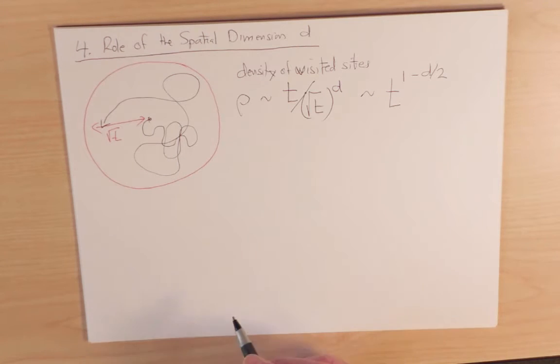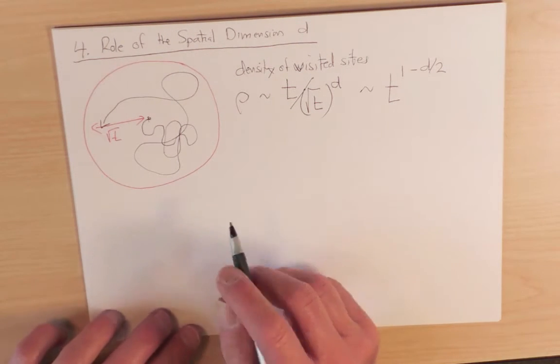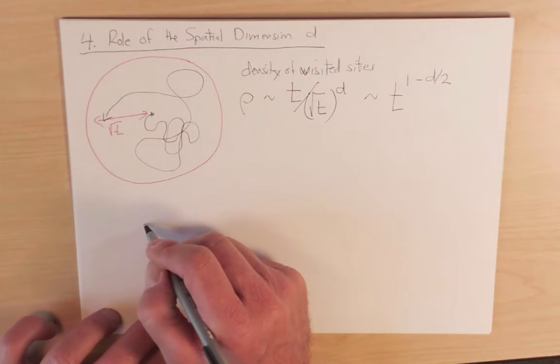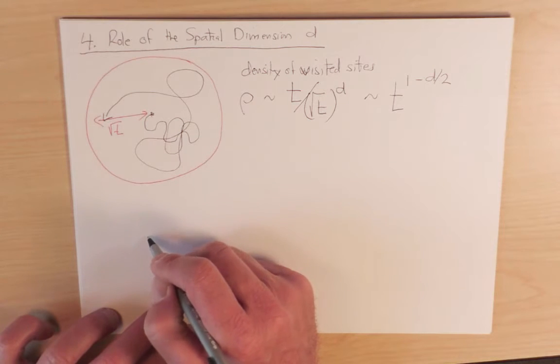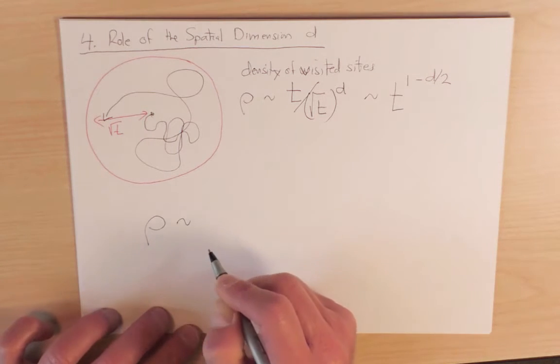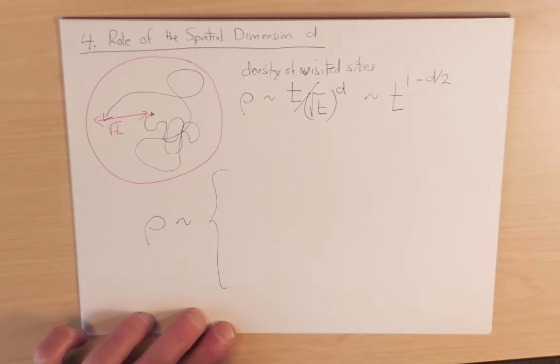So this density of visited sites has three fundamental behaviors that depend on the spatial dimension. So if I look in a summary at how rho depends on time, there are three answers.